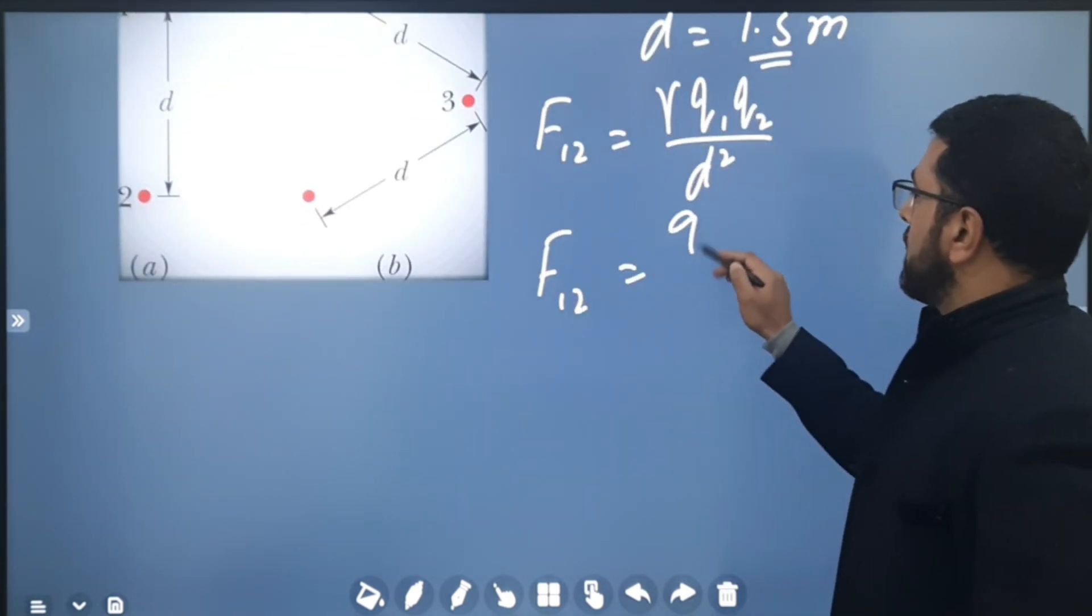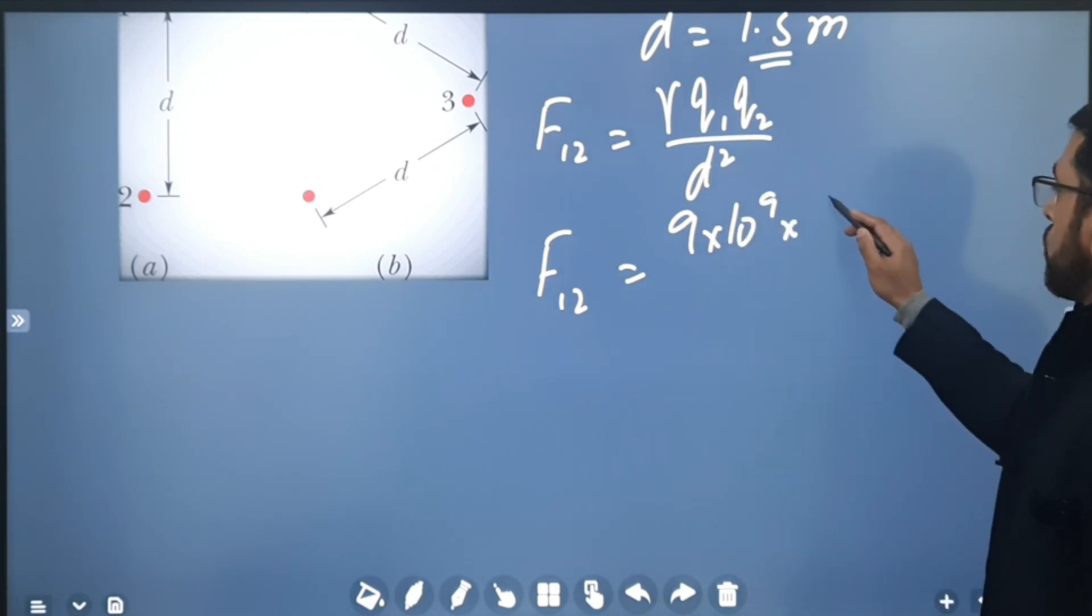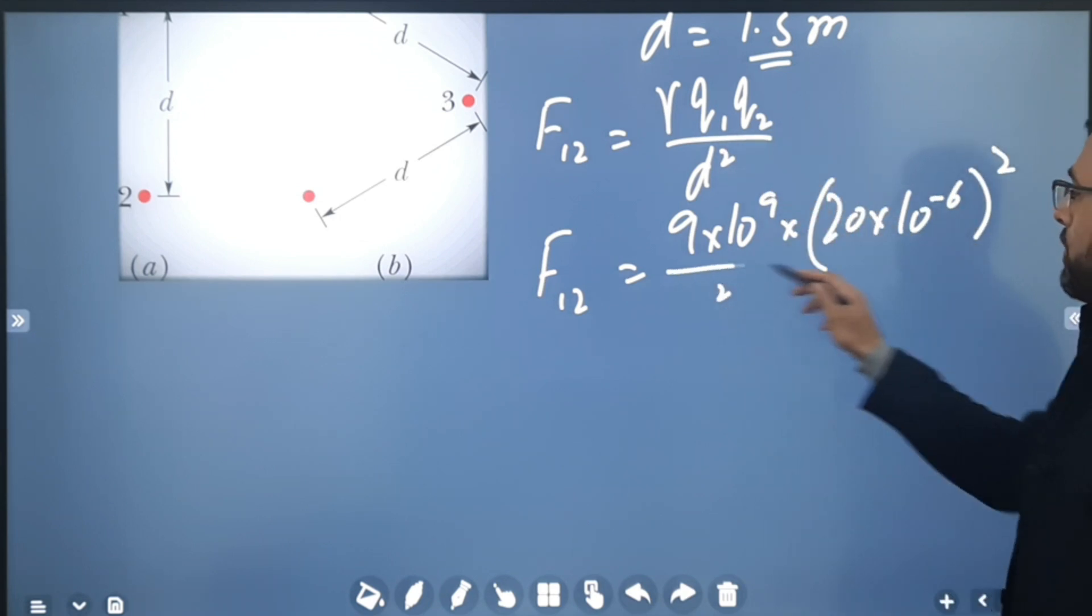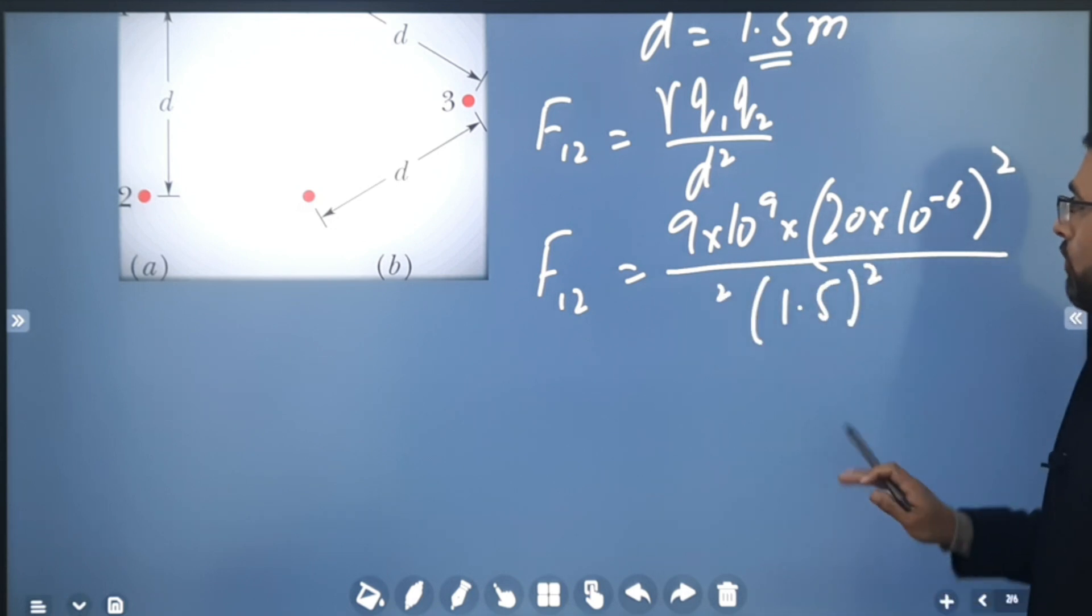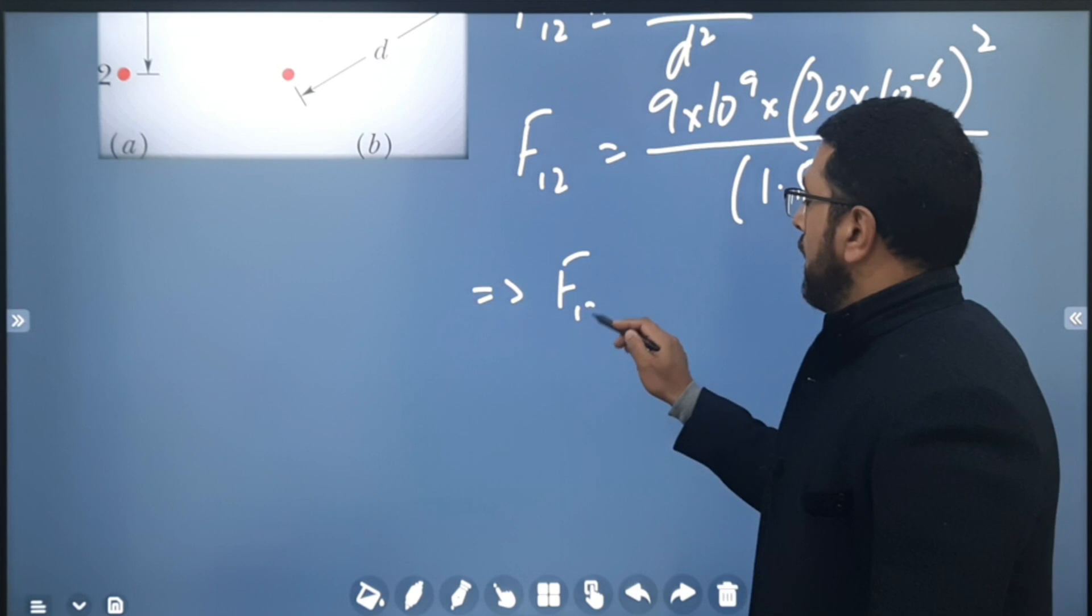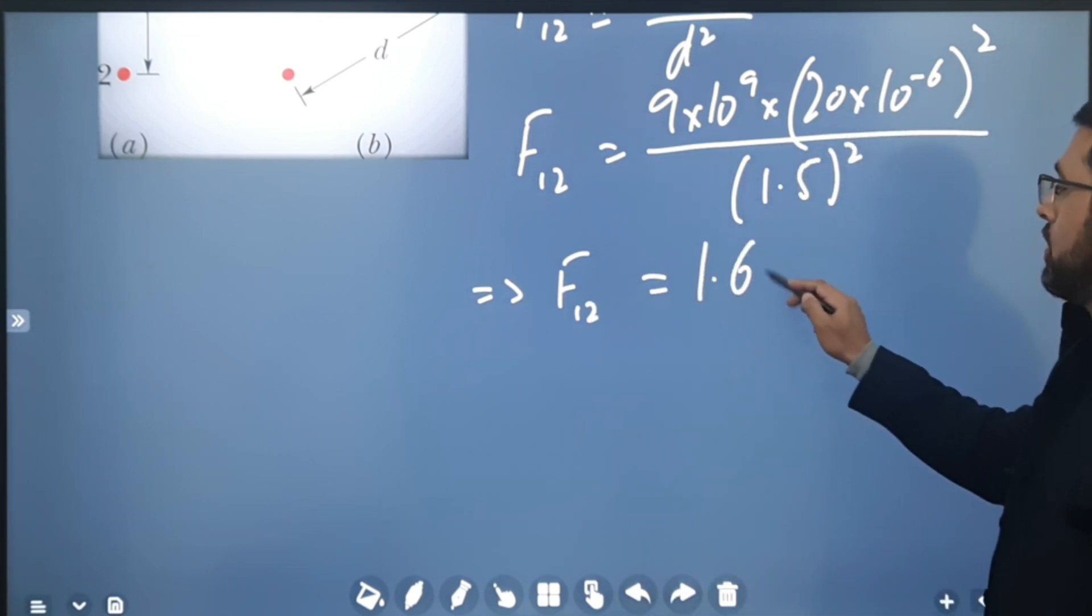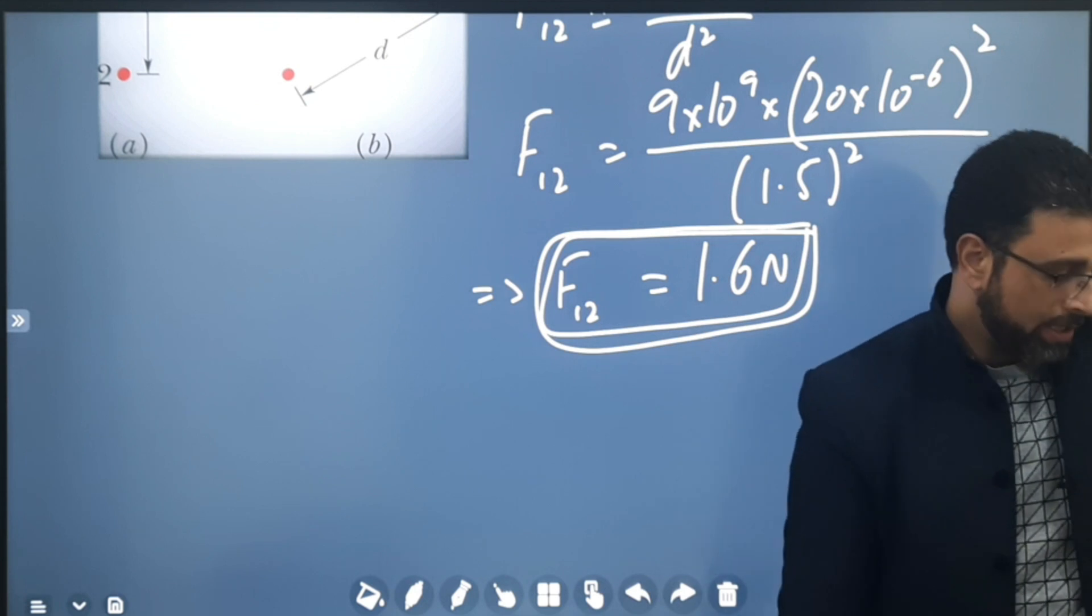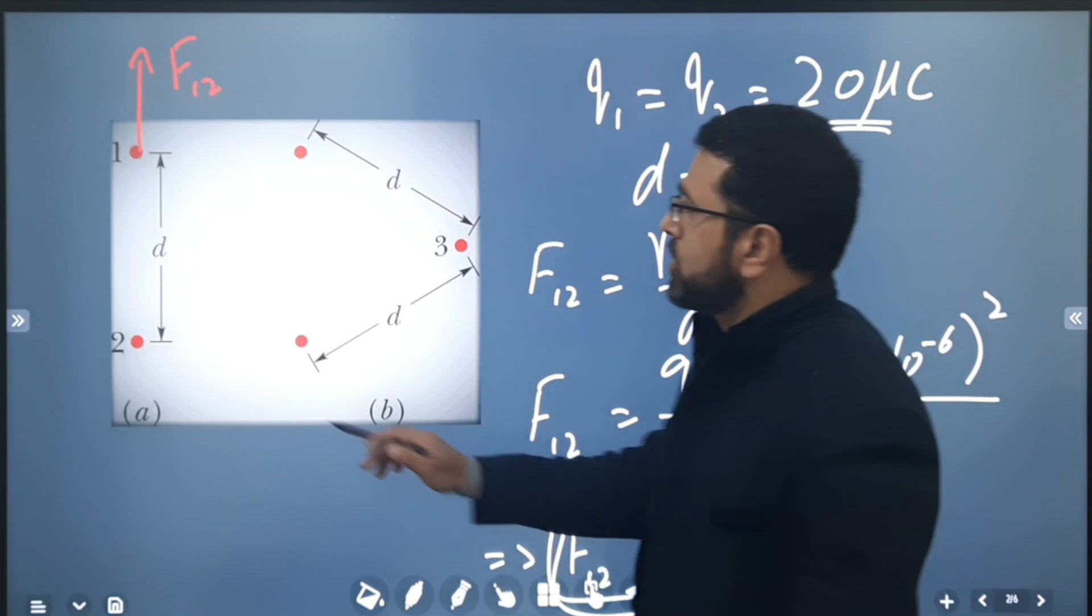F₁₂ is equal to k, which is 9 × 10⁹. q₁ and q₂ both are 20 microcoulombs, so 20 × 10⁻⁶ squared, both of them are same so I'm writing squared, divided by d² where d is 1.5 squared. Now solving this, F₁₂ comes out to be 1.6 newtons. So this is the force that particle 1 experiences because of 2.